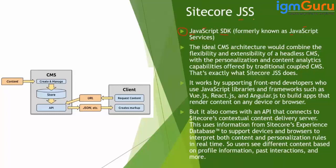If somebody asks you what is JSS, JSS is the JavaScript SDK. It means you can use Angular, React, Vue.js, or Next.js — these frontend technologies. It provides an API, so through your Angular application you can call this API, and this API will call Sitecore to get the data.